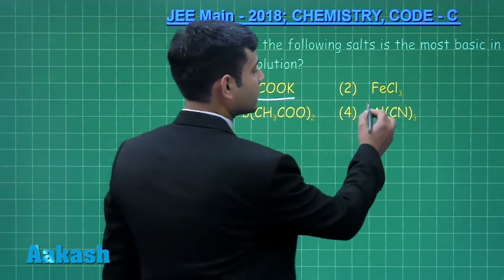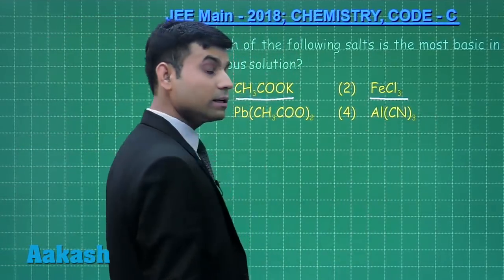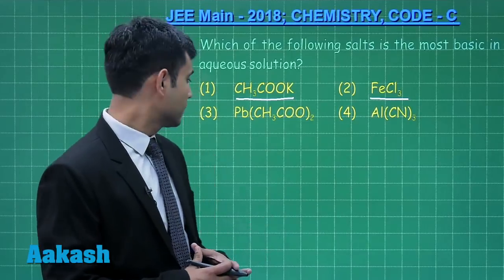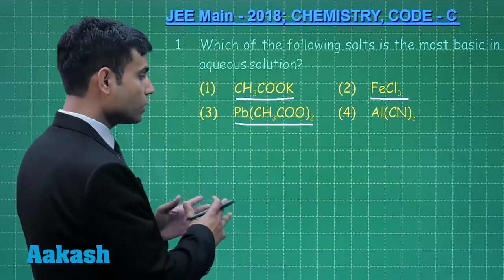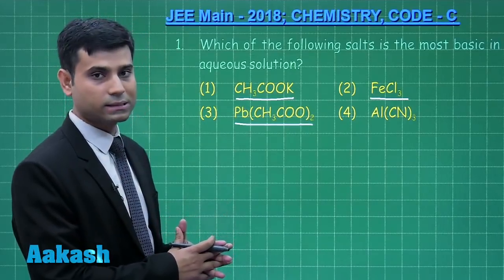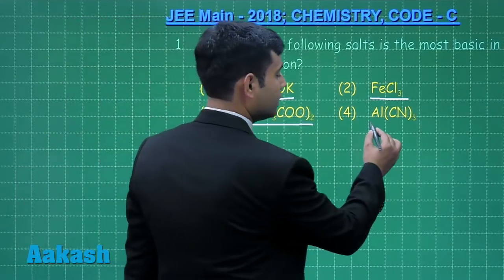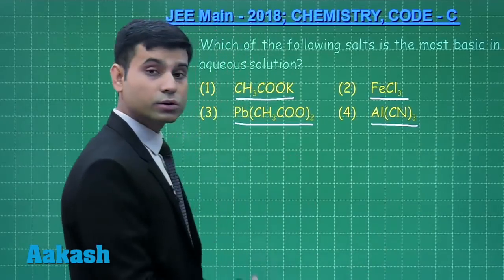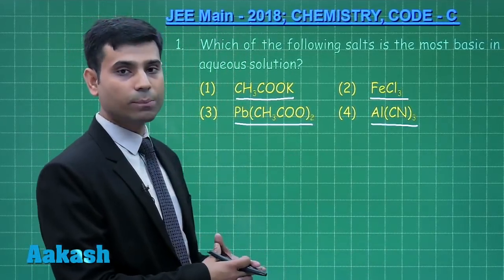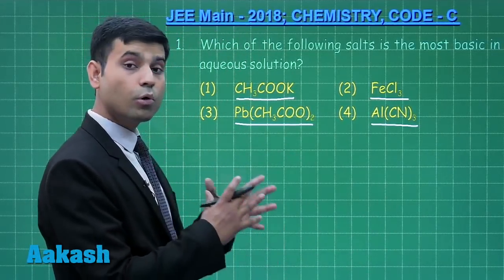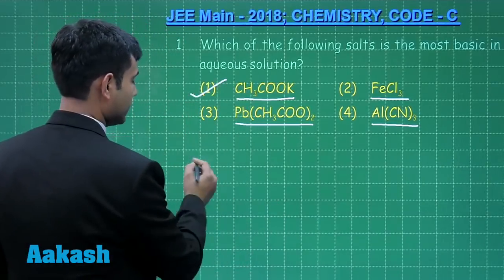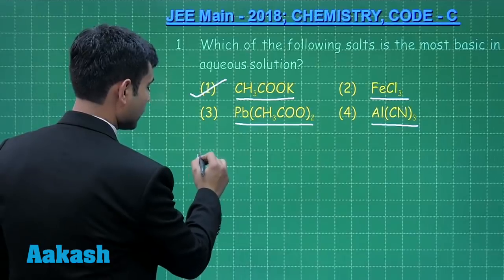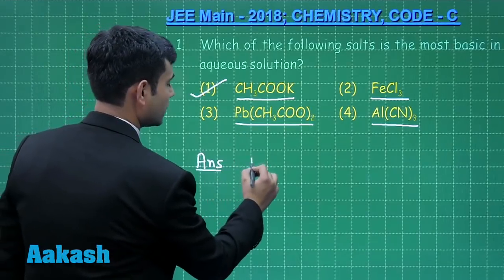FeCl3 on hydrolysis gives an acidic solution. Lead acetate is a salt of weak acid with weak base. Aluminum cyanide is also a salt of weak acid with weak base. Hence, the most basic solution will be option 1, potassium acetate. Answer is option 1.